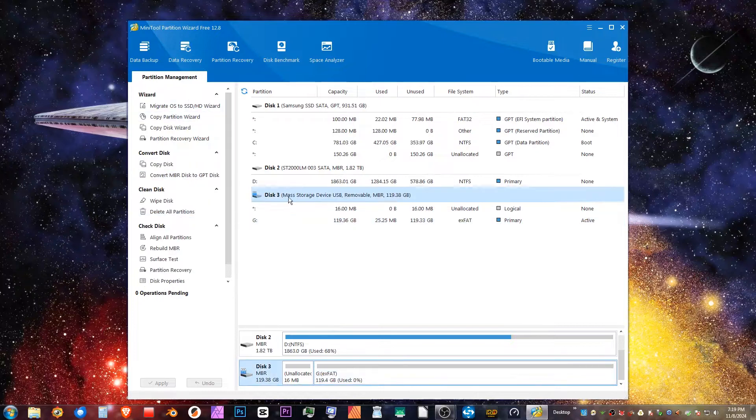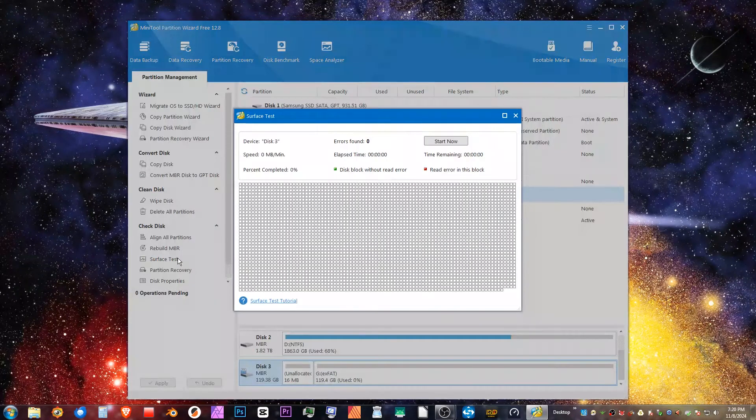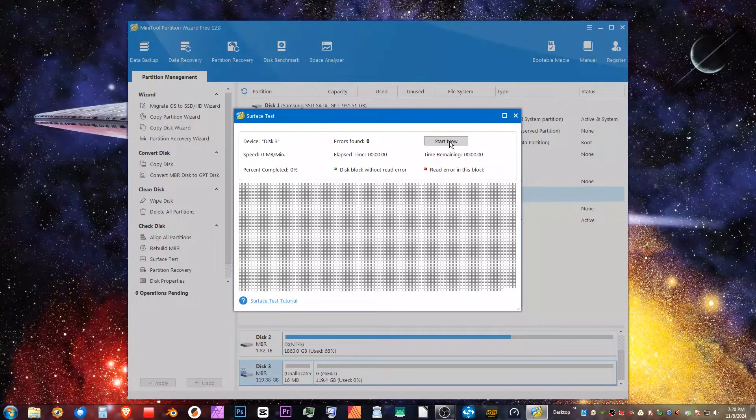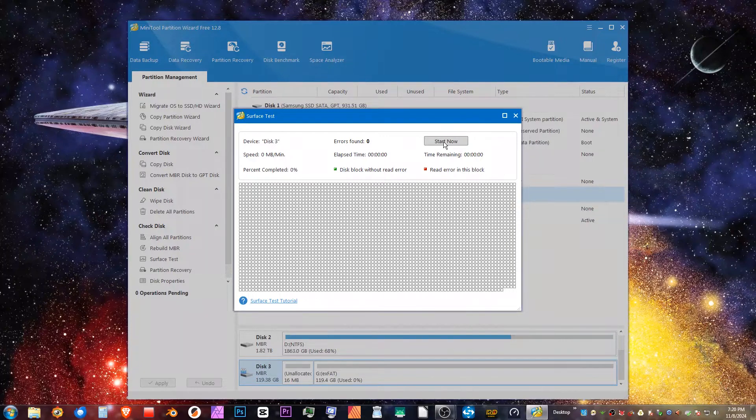All right, so let's go ahead and open my Partition Wizard. Let's select the SD card, let's do a surface scan. This 128 gigabyte SD card is probably going to take a while, but let's go ahead and start this and see what happens.